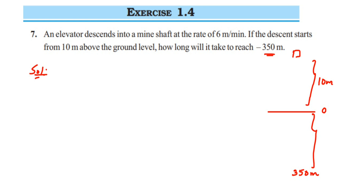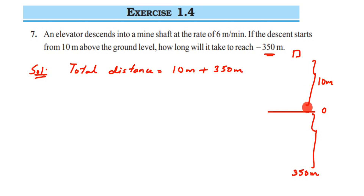So total distance is equal to 10 meters plus 350 meters. I am adding them because the elevator is currently 10 meters above the ground and has to go 350 meters below. I am not using minus 350 here because I am finding total distance. If I subtracted, I'd get minus 340, which would just be the elevator's position — not the distance traveled. Total distance equals 360 meters.